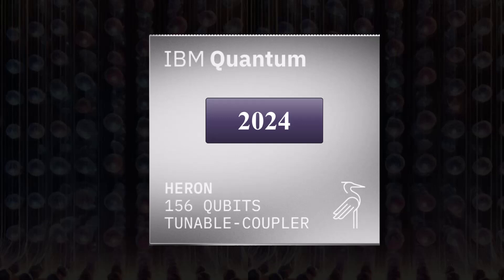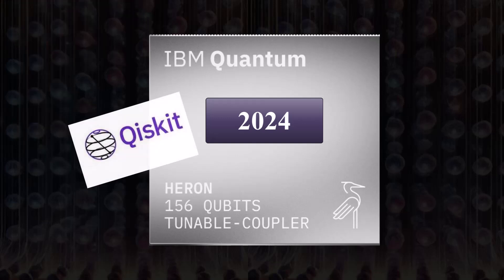Fast forward to 2024, IBM introduced Quantum Heron, the most advanced quantum processor, and Qiskit, the cutting-edge software driving this revolution.